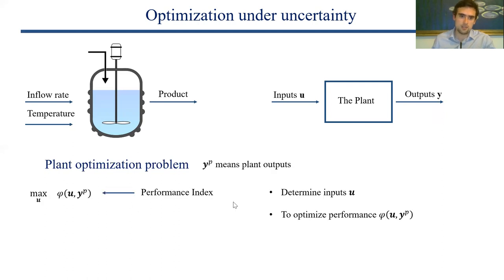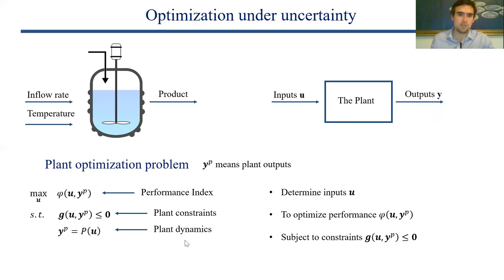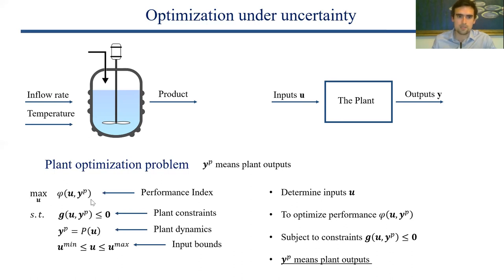The plant optimization problem has a performance index which we want to optimize, some plant constraints — expressions we do not want to violate, such as temperature or environmental constraints — and the plant dynamics, which express mathematically that inputs u go into the plant and we get outputs y. There are also bounds on controls; you cannot move valves to infinity or minus infinity. I want to emphasize that I use a superscript p on y to denote the output of my plant — values I can actually measure on the real system.